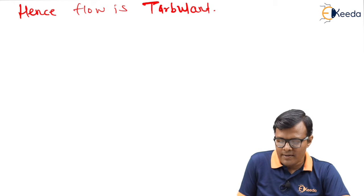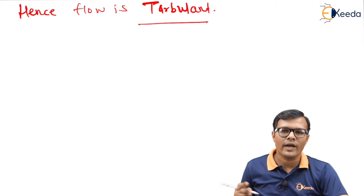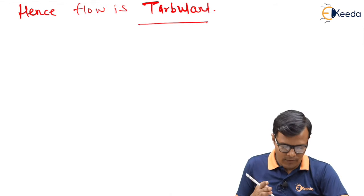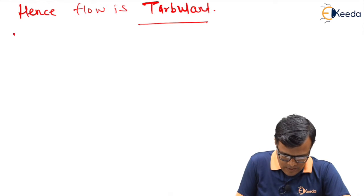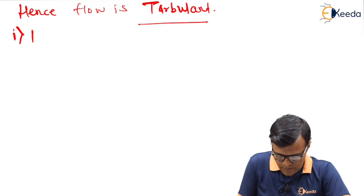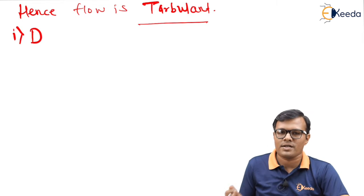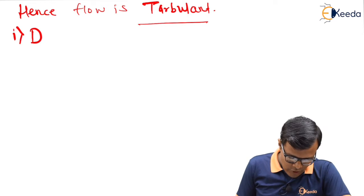Hence flow is turbulent. If it is clear that it is turbulent flow, then we can use the formula related with turbulent flow. We will start with Darcy-Weisbach equation because our first term to calculate is head loss.